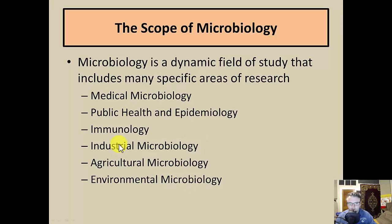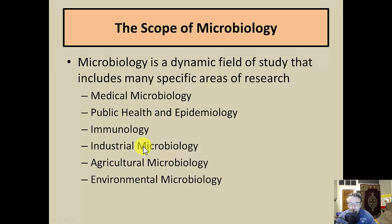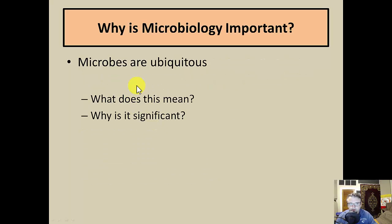With this class, we look at every one of these to a certain extent, but the truth is we'll focus on medical, public health and epidemiology, and we'll definitely spend a lot of time on immunology. We'll spend less time on industrial, agricultural, and environmental, simply because the first three topics take up a lot of our time. So that's a general overview of the scope.